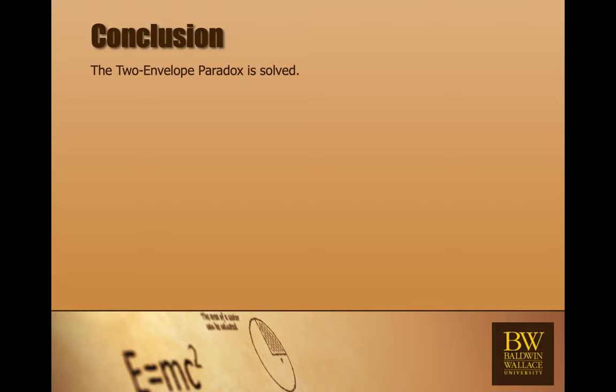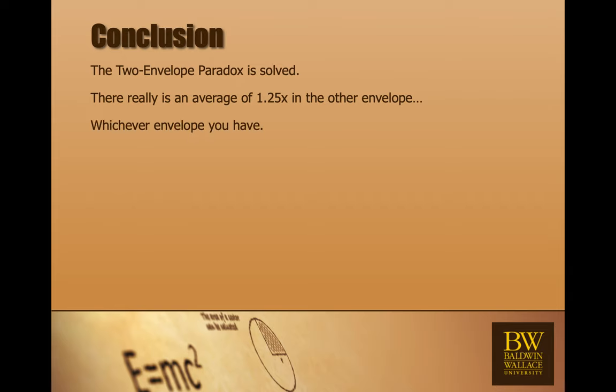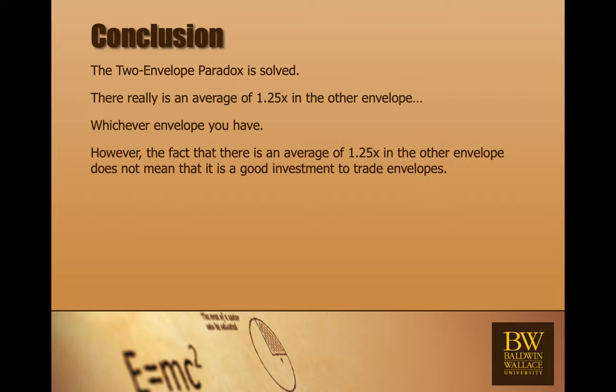In conclusion, the two-envelope paradox is solved. There really is an average of 1.25x in the other envelope, whichever envelope you have. But the fact that there is an average of 1.25x in the other envelope does not mean that it is a good investment to trade envelopes.